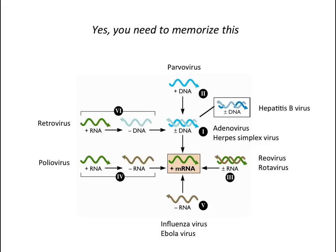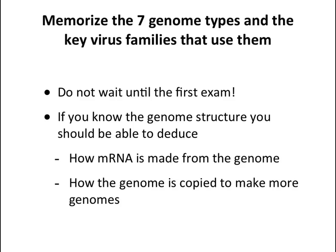Memorize these seven genome types. What I want you to know is: the genome structure, how mRNA is made, and how the genome is copied. Given any virus genome class — say, single-stranded plus-sense — you should be able to tell me how mRNA is made and how the genome is copied. I'm going to tell you today, and it's pretty straightforward.